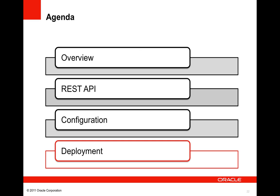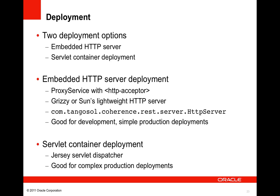There are two basic ways to deploy the Coherence REST API. The first is running an embedded HTTP server in a proxy server JVM — great for simple production deployments or testing during development. To use this option, start a proxy server with a cache configuration file that includes an HTTP acceptor configuration element under its proxy scheme element, specifying the listen address, port, and type of embedded HTTP server. Coherence includes integration with Grizzly and Sun's lightweight HTTP server out of the box, and custom integrations can be created by implementing the HTTP server interface.